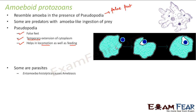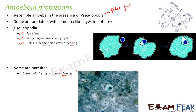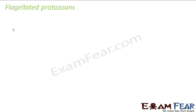Amoeboid protozoa can be parasitic as well. They can live inside the body of another living organism and obtain their food from it. One example is Entamoeba histolytica, which causes the disease amoebiasis. It lives in the body of human beings or other primates and obtains its nutrition from them. It can cause infection in the digestive tract, giving rise to amoebiasis. The name of the disease is derived from the word amoeba.